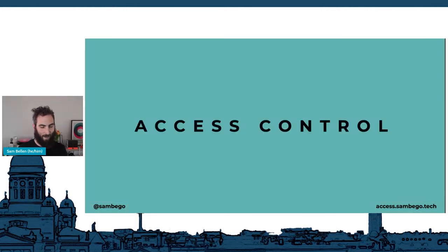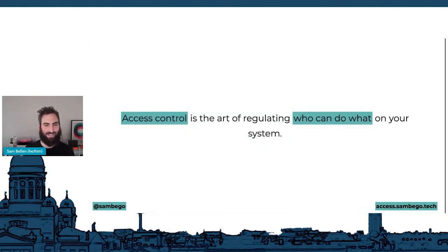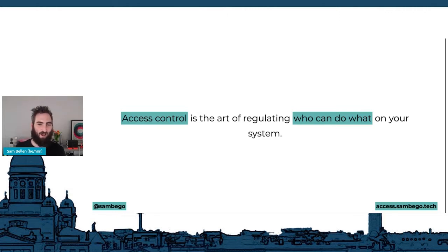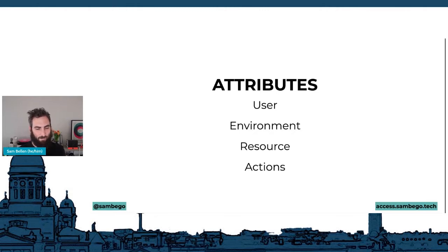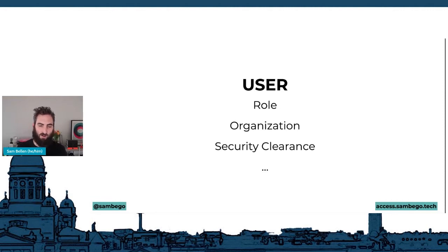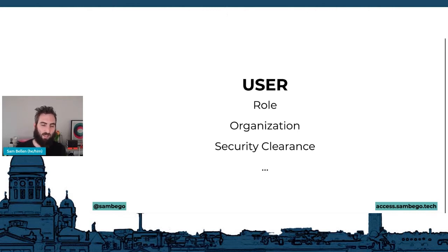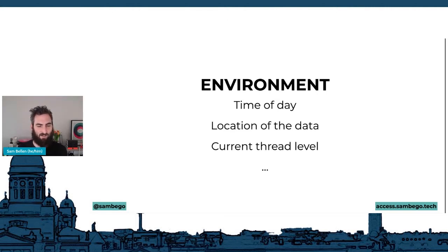Access control, to me, is the art of regulating who can do what on your system. I call it an art because there are no real rules — it's always a use case you have to decide for your own system and architecture. The first type is attribute-based access control, also sometimes known as policy-based access control, and it usually implements four main attributes: user, environment, resource, and action.